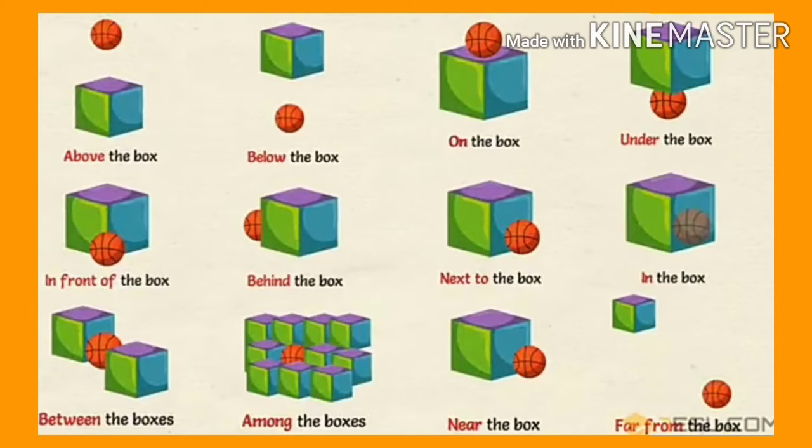In the third picture, the ball is on the box. In the next line, the ball is in front of the box. Next to this, the ball is behind the box. Then the ball is next to the box.